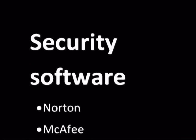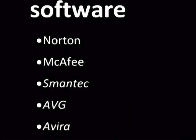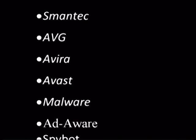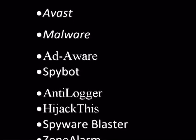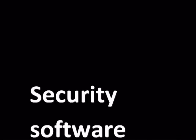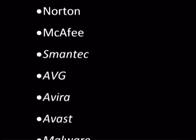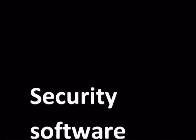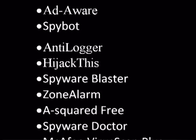Here's our list of free antivirus software: Norton, McAfee, Symantec, AVG, Avira, AVAST, Malwarebytes, Adaware, Spybot, Anti-Logger, HijackThis, Spyware Blaster, Zone Alarm, and Threatfire. We had like eight pages of antiviruses we could have put on — there are a lot more out there. But those are a lot of the good ones. You can get most of them from downloads.cnet.com, though some like Norton and McAfee are trials.